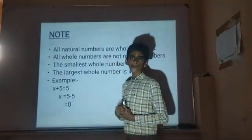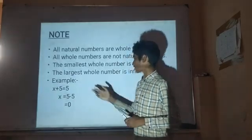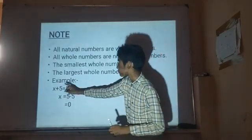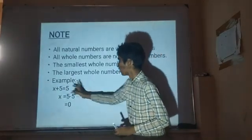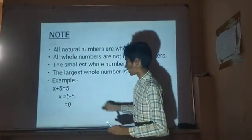Whole numbers are used to solve sums like x plus y is equal to 5, giving x equal to 5 minus 5, which is 0.